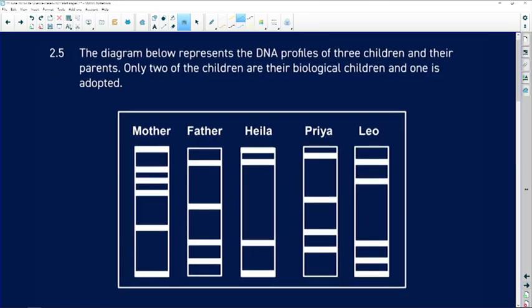Moving on, the diagram below represents a DNA profile of three children: Hela, Priya, and Leo, and their parents, mother and father. Only two of those three children are the biological children of the mother and father, and one is adopted.